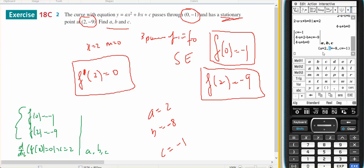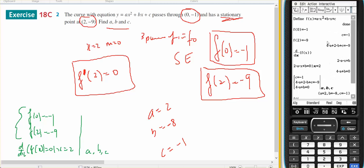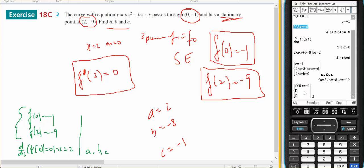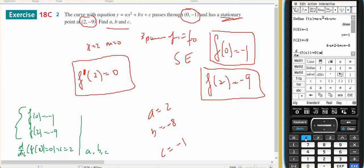So just to prove that, I'll go to Math 1 and get my simultaneous equations. I know that f(0) equals -1 is my first one, f(2) equals -9 is my next one, and f'(x) equals 0 given x equals 2. If I take all of that, copy, paste, and solve it for a, b, and c, I get the same answers.